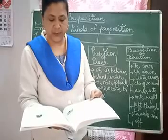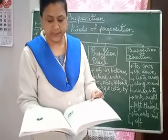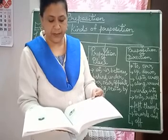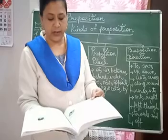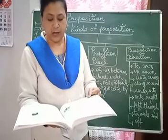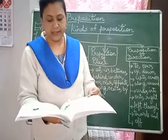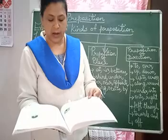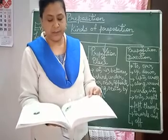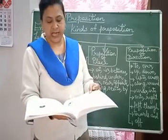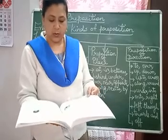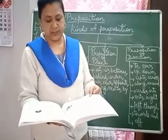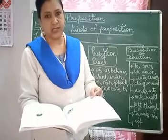Usually the preposition is placed before the object; however, sometimes it is placed after the object to form a question. For example: What games are you interested in? — 'game' is the object and the preposition 'in' is placed at the end. What are you looking for? — the preposition is at the end. Who was the principal complaining about? — 'principal' is the object and 'about' is the preposition at the end.